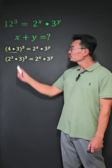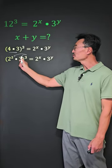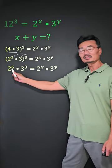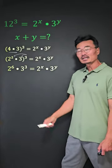And then we'll apply the cube to 2 squared and also the 3, which will make it 2 to the 6th and 3 cubed. As you can see here.